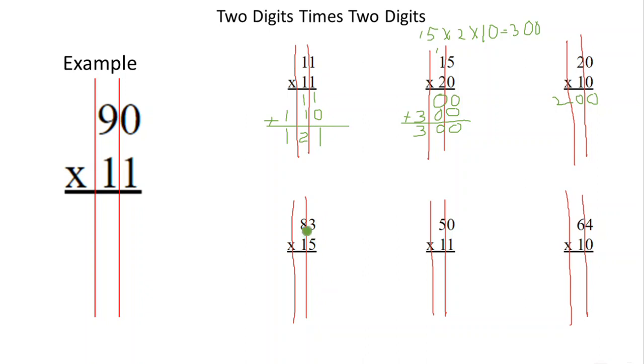Let's look at this here. 83 times 15. 5 times 3 is 15. 5 times 8 is 40, plus 1 is 41. So when we move into this tens column here to multiply, we automatically should just put a 0 here so we know. So 1 times 3 is 3, 1 times 8 is 8. Let's add this up. There's 5. 8 plus 4 is 12. 1,245.